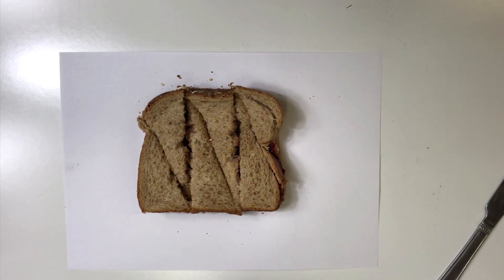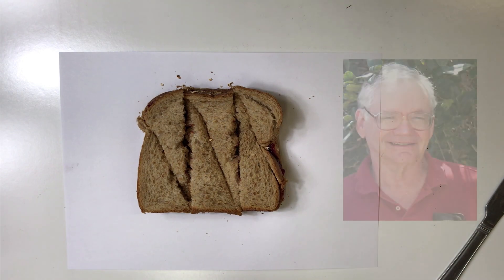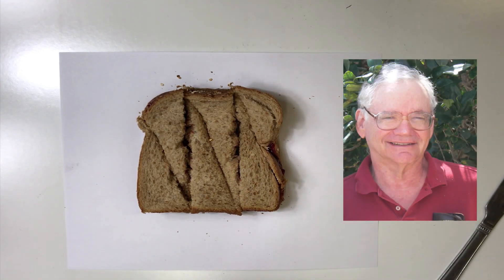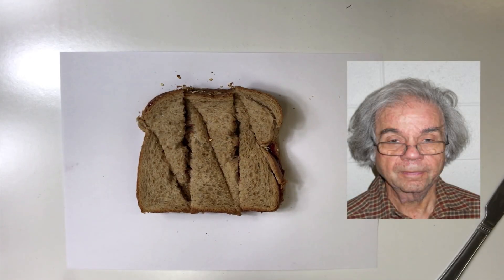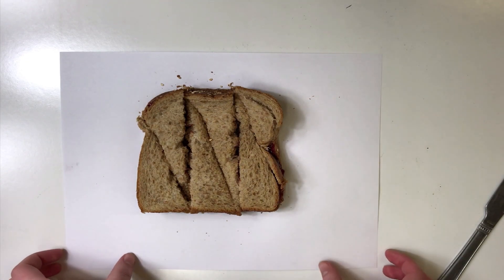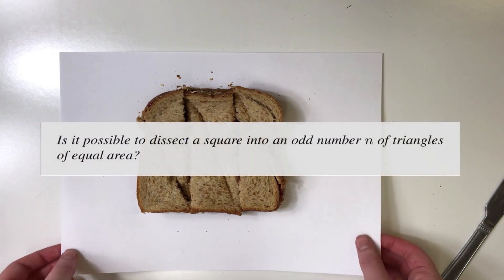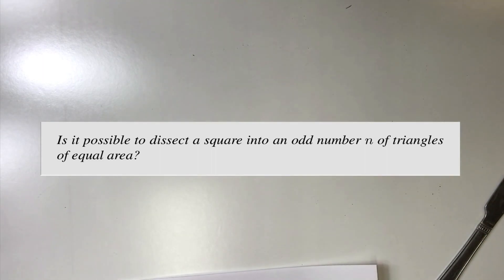This question was first posed by mathematician Fred Richman in American Mathematical Monthly in 1965 and was finally proved by Paul Monsky in 1970. The question Monsky was able to solve is if a square is dissected into triangles of equal areas, can the number of triangles be odd?